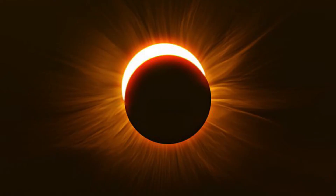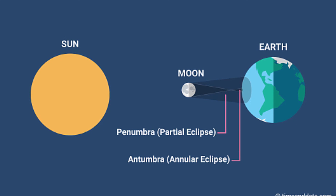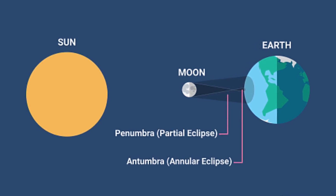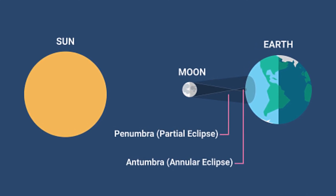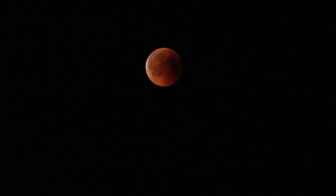This is when the moon appears smaller than the sun when viewed from earth. There are 5 distinct stages of an annular solar eclipse. First contact: the partial eclipse begins. The moon's silhouette starts becoming visible in front of the sun's disk, and the sun looks as if a bite has been taken from it.